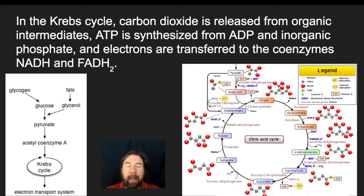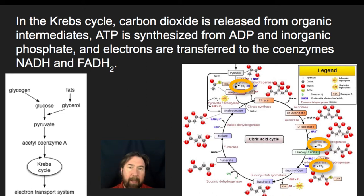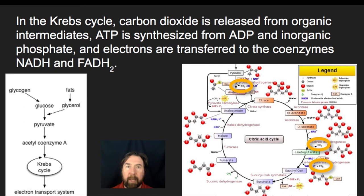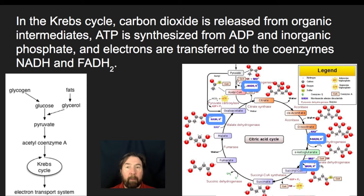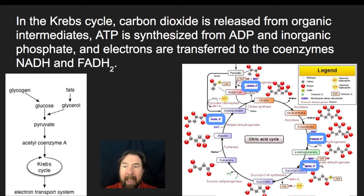The Krebs cycle has a lot going on. We take the carbon backbone and release carbon dioxide from organic intermediates, ultimately bringing those carbons down to zero. Six carbons come in as glucose; we lose a couple making acetyl-CoA, and get rid of the rest through the Krebs cycle. We synthesize some more ATP from ADP and inorganic phosphate, and crucially we make a whole bunch of NADHs and FADH2s from every pyruvate that enters. One molecule of glucose produces two pyruvates, each entering the citric acid cycle, so every NADH or FADH2 produced effectively happens twice before reaching the electron transport chain.